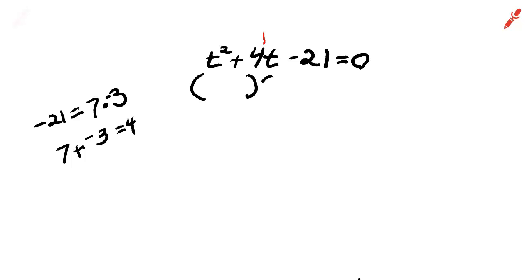That four right there. Your B number. All right, now set each factor equal to zero.